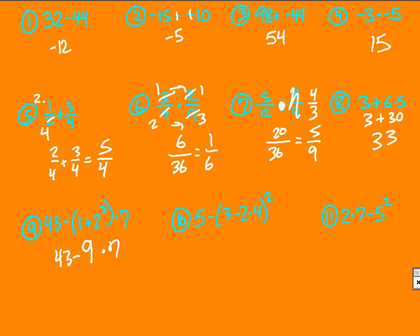So now order of operations tells us you have to do the multiplication before the subtraction. So 9 times 7 is 63. So now you just have 43 minus 63, negative 20 is your answer. Reminder, there is no calculator on this test tomorrow.